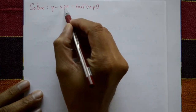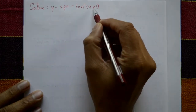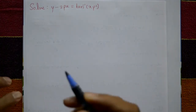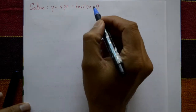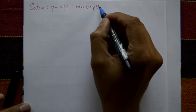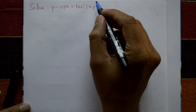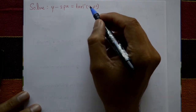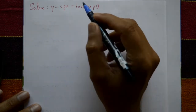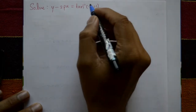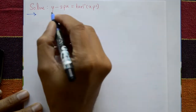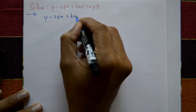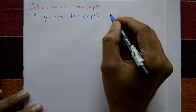Solve y minus 2px equals tan inverse of xp squared. Now find the general solution. To find the general solution, we first check if the given equation is solvable for p, solvable for y, or solvable for x. After we differentiate, separate the variable, integrate, and eliminate p, then we get the general solution.